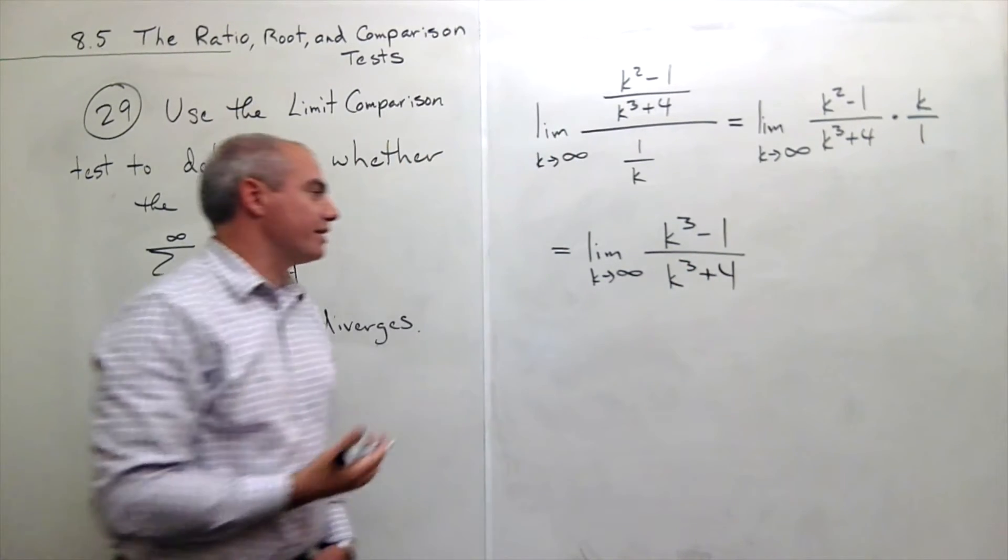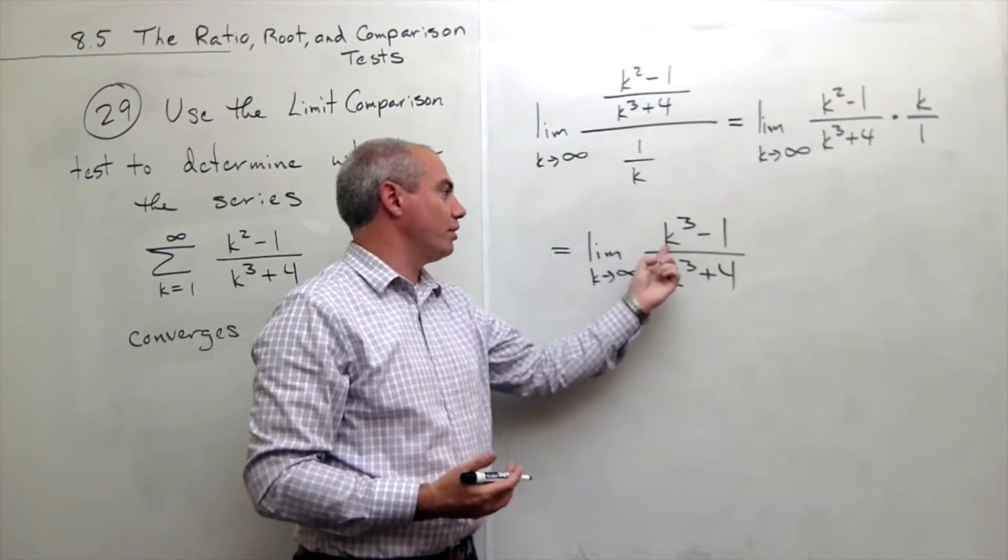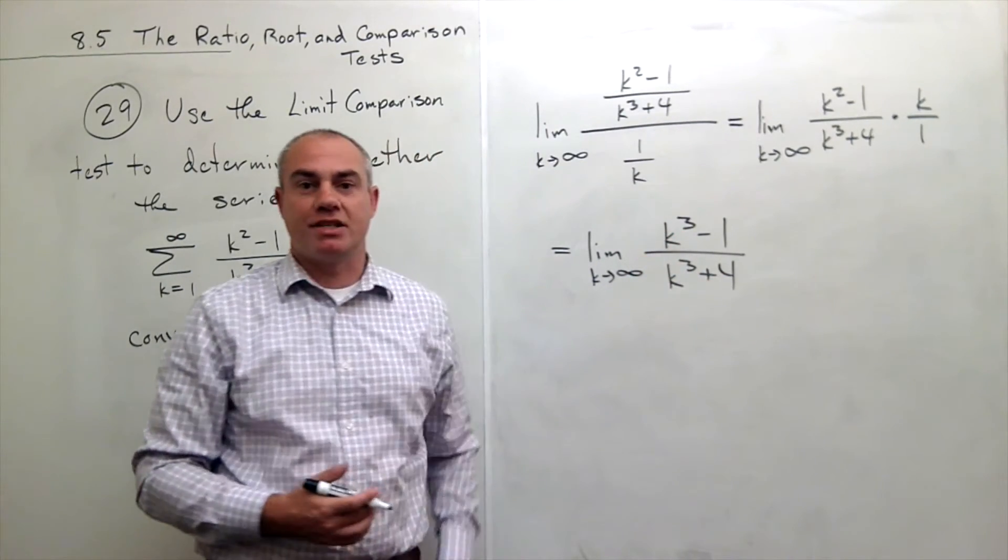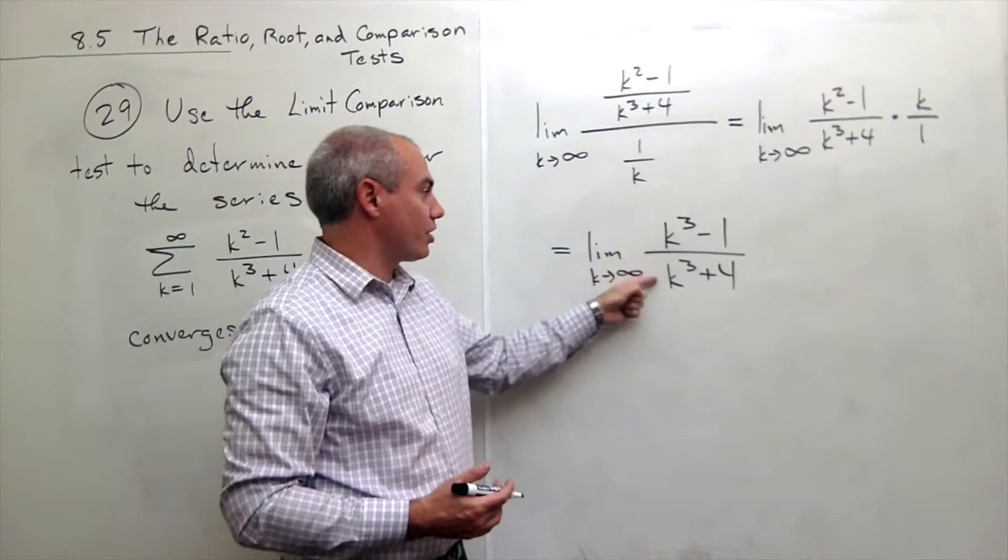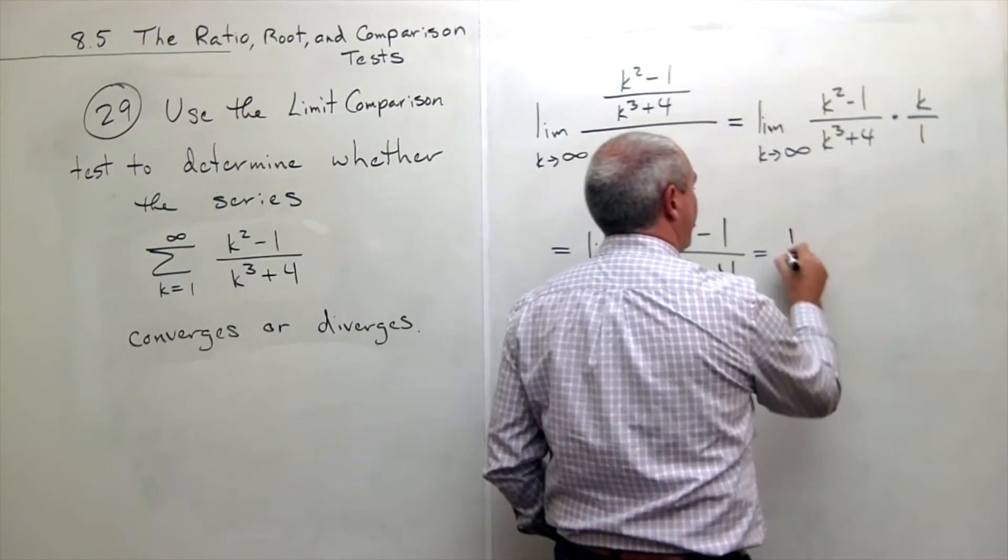But now I'm just taking the limit as k goes to infinity of a rational function where the highest power of k on top and bottom is the same. So I can just take the coefficients out in front of the k cubed and I get 1 over 1 which is 1.